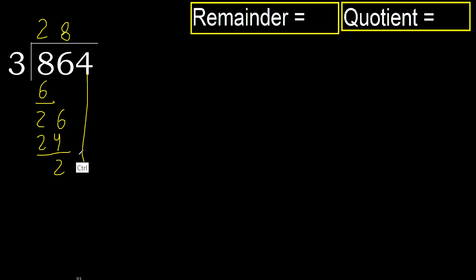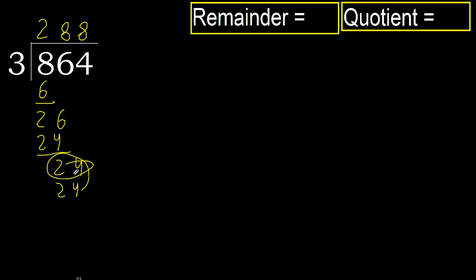Subtract. Next: 24. 3 multiplied by 8 is 24 — 24 is not greater. Subtract. Next: there is no number, therefore finish it.